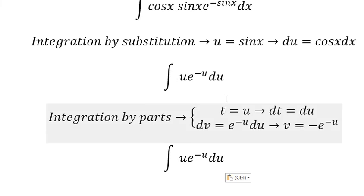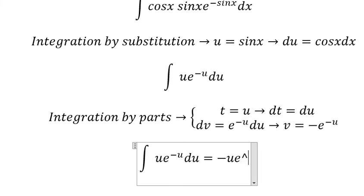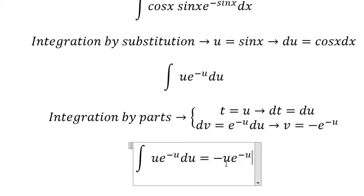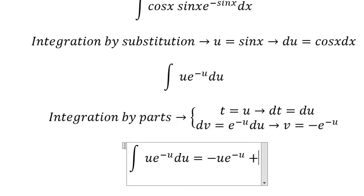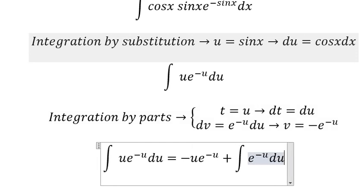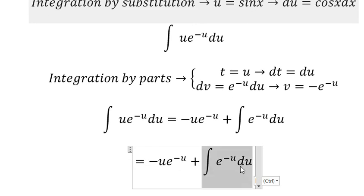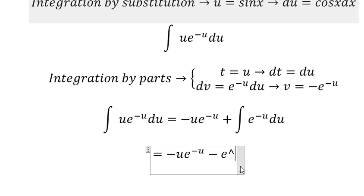So we get t times v, which is negative u times e to the power of negative u. Because we have a negative sign here, this becomes positive. And we have the integral of e to the power of negative u du. This gives us negative u times e to the power of negative u, minus e to the power of negative u, plus C.